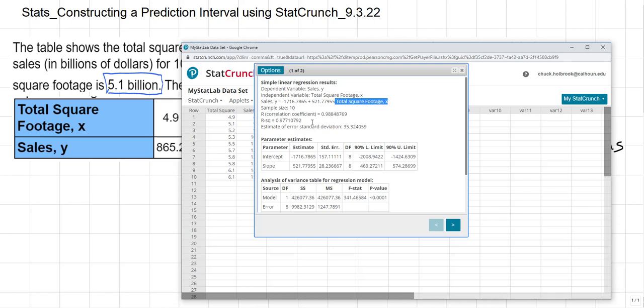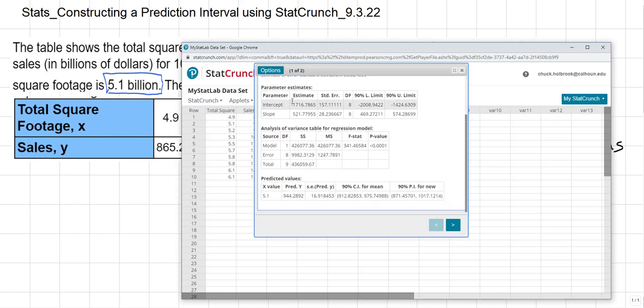It's also going to give you a sample size, which we already know is 10. It gives you your correlation coefficient and your r squared value. Now, I'm going to look down at these different tables. The one I'm really interested in is down here where it says predicted values. The x value is the value that I plug into the regression line. The predicted value is 944.2892.